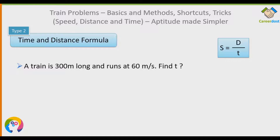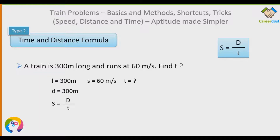Let's solve a simple problem to understand the formula better. A train is 300 meters long and runs at 60 meters per second. Find time T. Write down what is given: length of the train L = 300 meters, which is also the distance, and speed S = 60 m/s. Using S = D/T, we get T = 300/60 = 5 seconds.